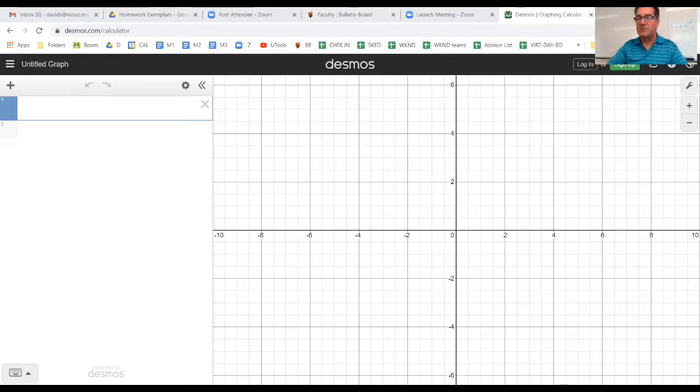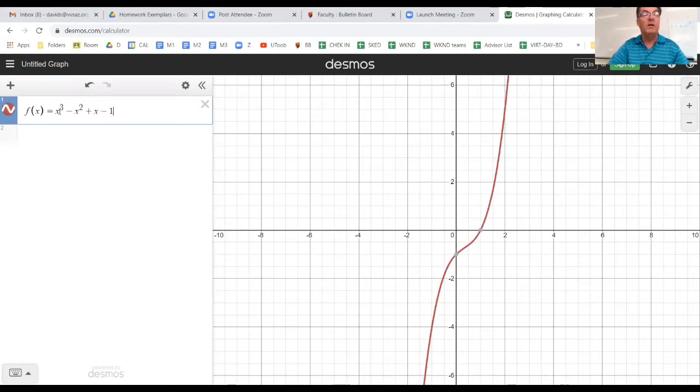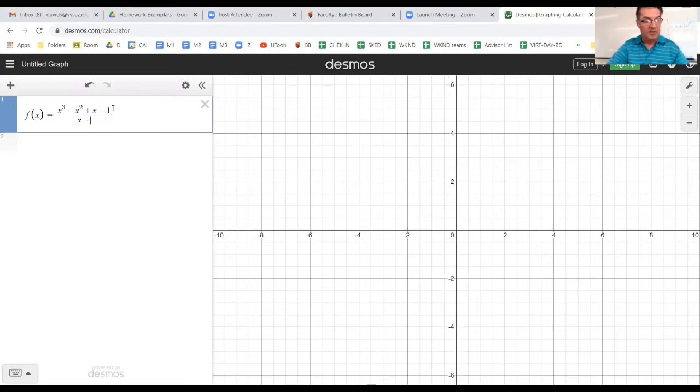Okay, so here I am in Desmos. I'm going to go ahead and take a moment to type in the function that we're going to explore with this little activity. f(x) equals, this is sort of a complicated one. We're going to do x³ - x² + x - 1, and we're going to put this all over x - 1.